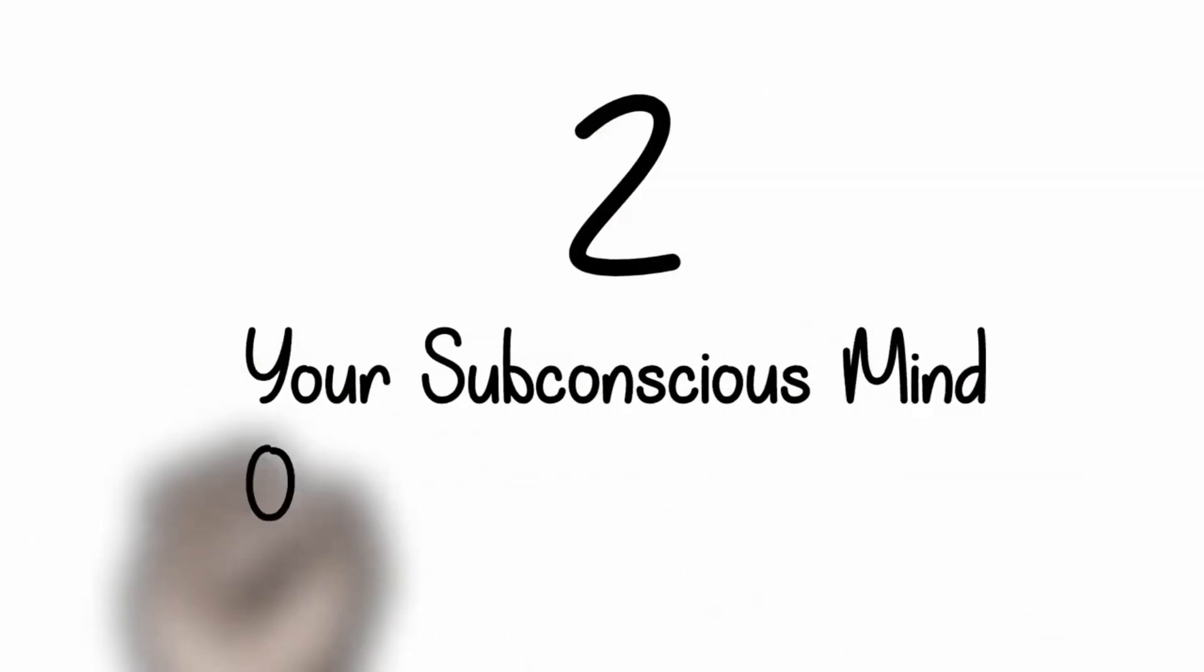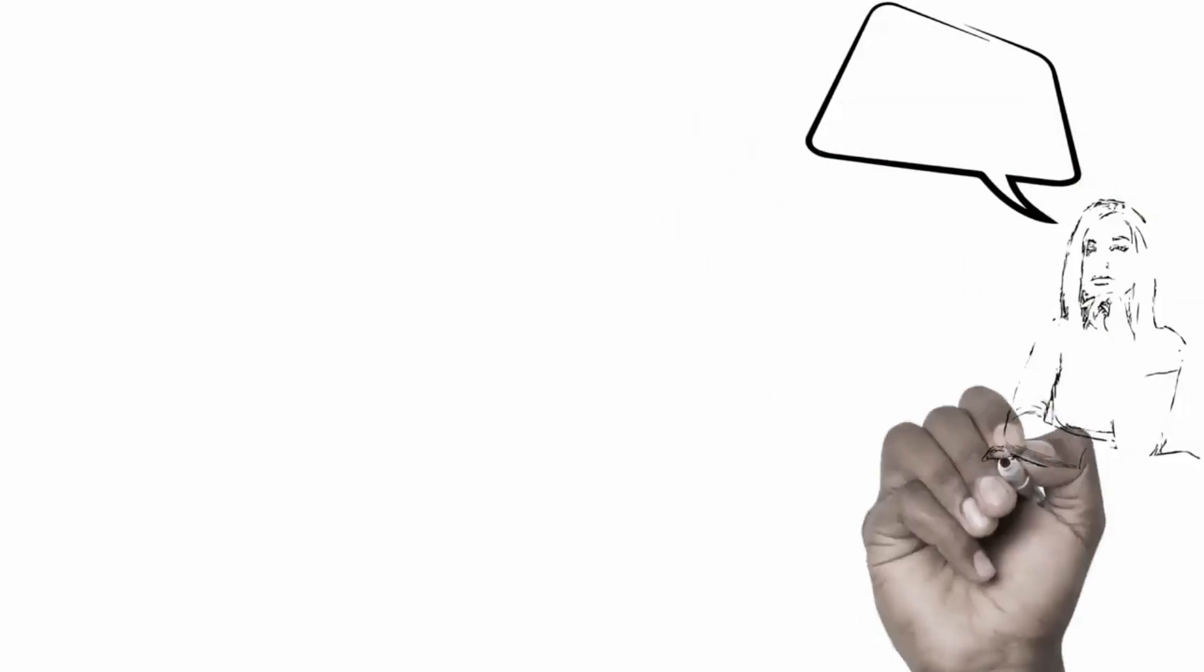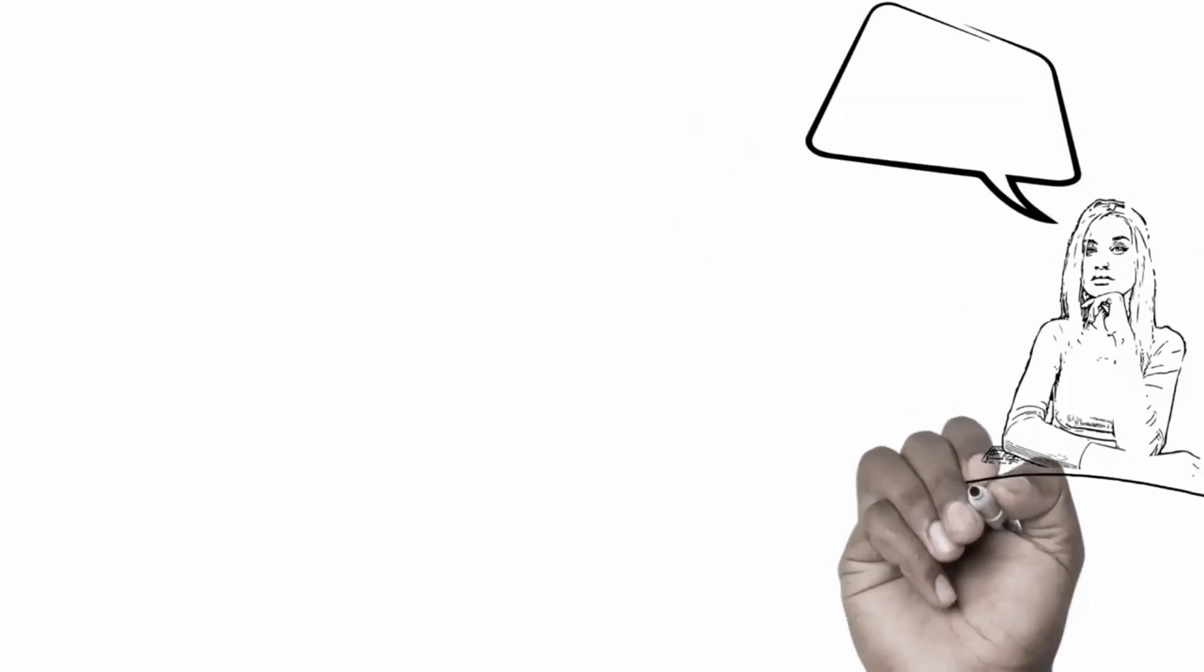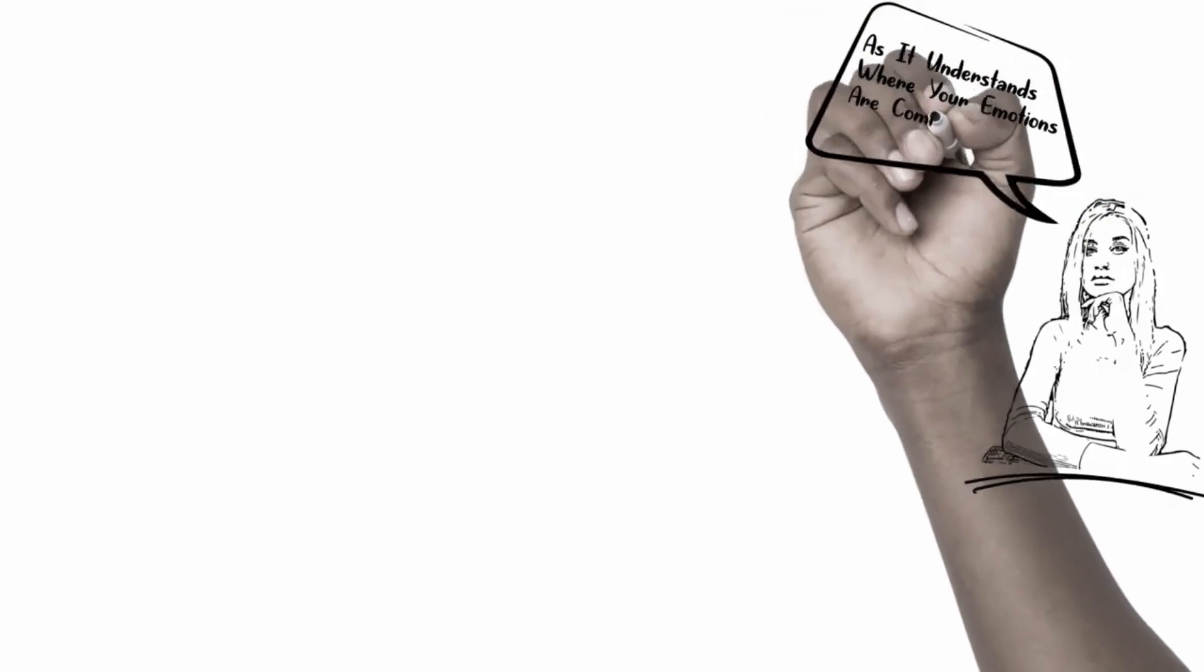2. Your subconscious mind overrides your emotions. While the conscious mind can easily be overruled by emotions, the subconscious mind allows you to override your emotions as it understands where your emotions are coming from.